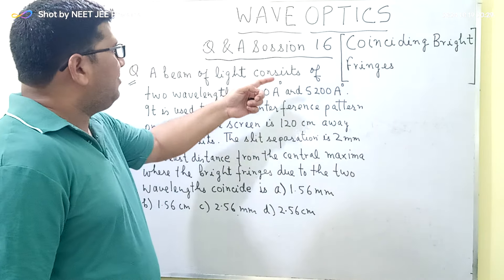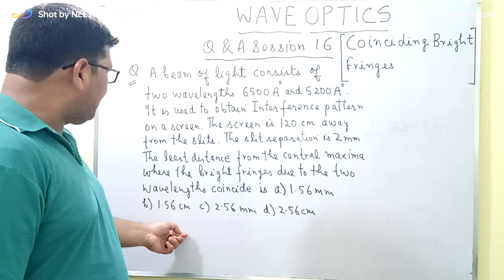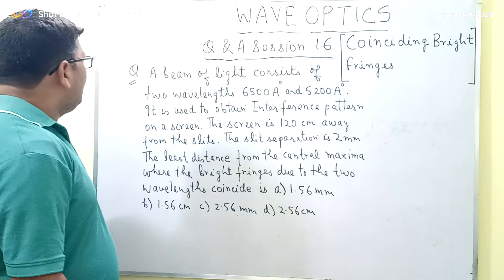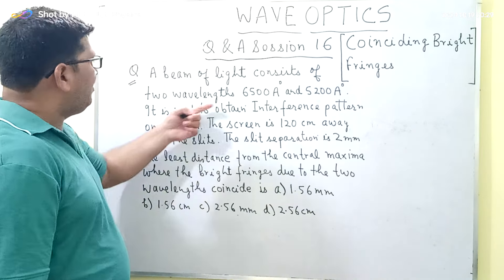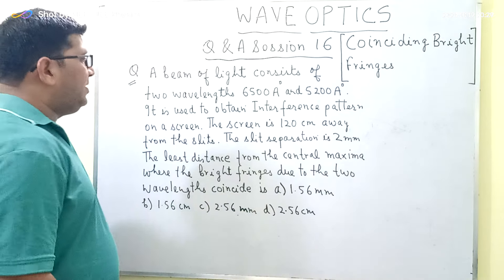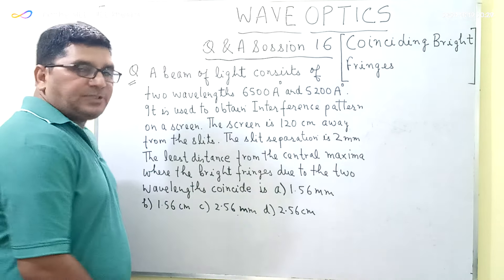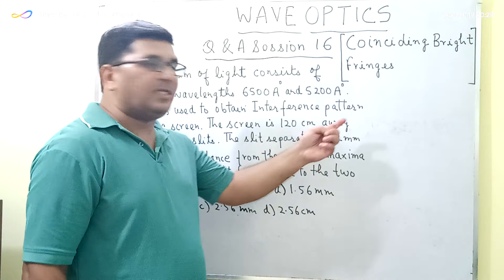Welcome to Q&A session 16 from the playlist of wave updates. The topic is coinciding bright fringes. The question is: a beam of light consists of two wavelengths, 6500 angstrom and 5200 angstrom. This beam is used to obtain an interference pattern on a screen 120 centimeters away from the slits. The slit separation is 2 mm. Find the least distance from the central maxima where the bright fringes due to the two wavelengths coincide.